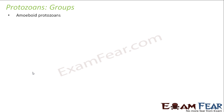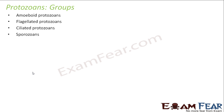Let us look at the different groups we are going to study under Protozoa: amoeboid protozoa, flagellated protozoa, ciliated protozoa, and sporozoa. All of these terms are self-explanatory. Let us quickly talk about the four types of protozoa with some examples of each type.